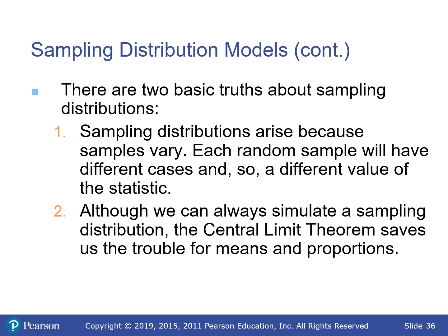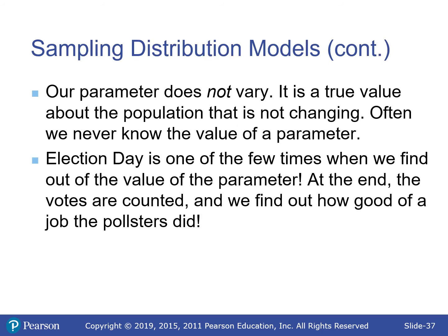There are two basic truths about sampling distributions. They happen because samples vary — if every sample were the same, we wouldn't need them. And while we could simulate a sampling distribution (as we did with dice averages for 1, 2, 3, 5, and 20 dice), the CLT tells us we don't have to because it will be normal as long as the sample size is large enough. The parameter — true population proportion or mean — is a fixed value.